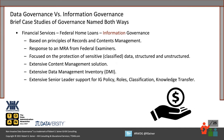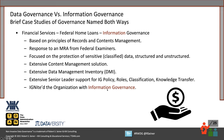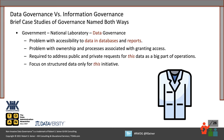Another organization in the financial services industry that focuses on federal home loans calls it information governance. Their program is basically based on principles of records and content management. They needed to address how they were governing their records and content management because their examiners gave them an MRA — a matter requiring attention. So focusing on the protection of sensitive data, extensive content management solution, extensive data management inventory, they called it IG — information governance — with the slogan that they were igniting the organization with information governance. They never used the term data governance. They started and continue to call it information governance.